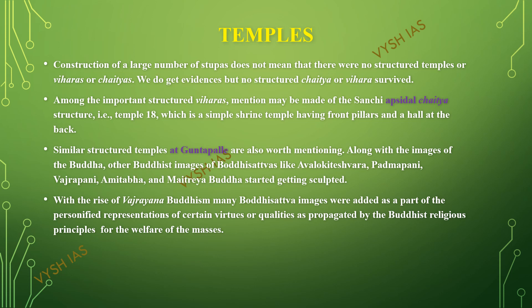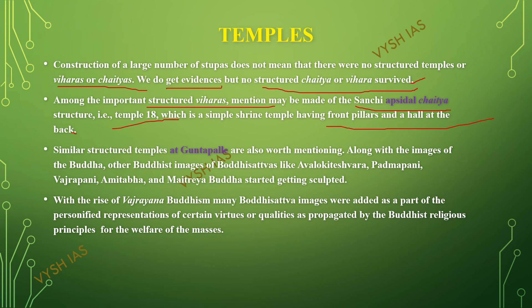Large numbers of stupas were constructed, and eventually temples, chaityas, and viharas were also constructed, though we do not have fully structured chaityas or viharas surviving till date. We do get evidence that they were constructed. Among the important structured viharas, the Sanchi apsidal chaitya structure — temple number 18 — should be mentioned. It is a simple shrine having front pillars and a hall at the back. Another is at Guntupalli, where rock-cut caves are found.